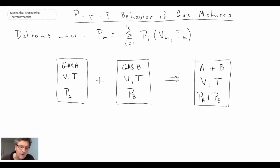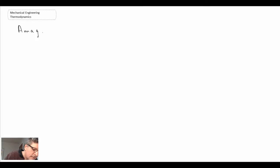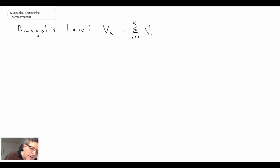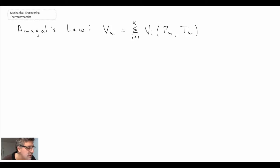So that is Dalton's Law illustrated, and it's also written in terms of the summation above. The second law that we will be relying on here is Amagat's Law. Again, I will write it out in terms of a summation saying that the volume of a mixture can be represented by the volumes of each of the individual components, provided that each component is at a common pressure and temperature.